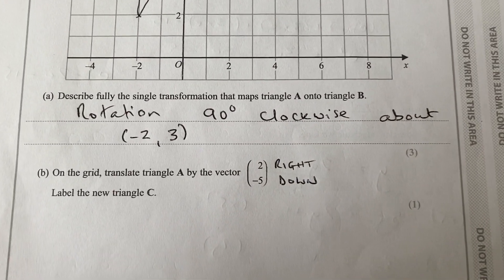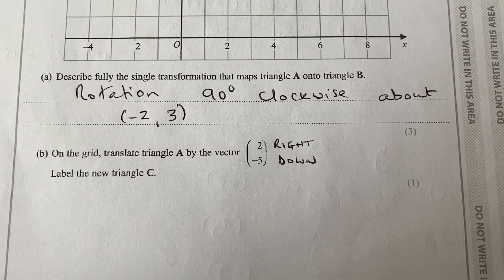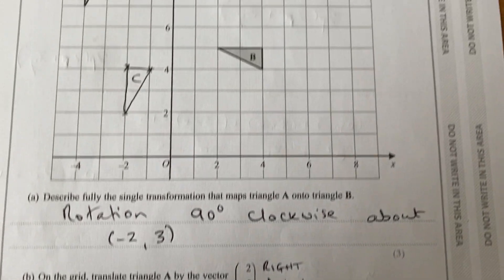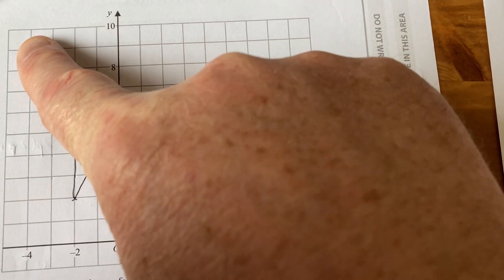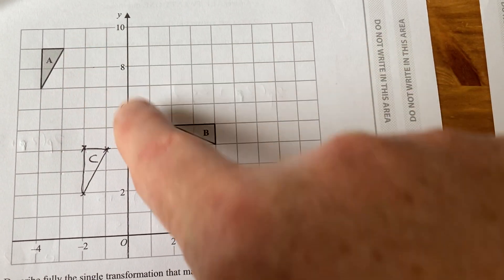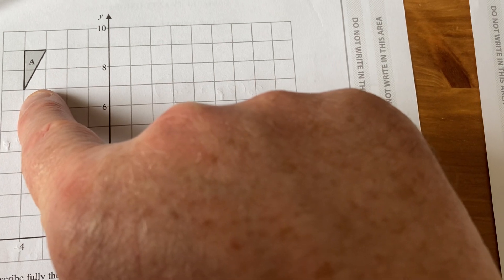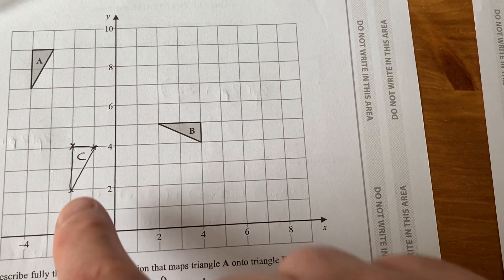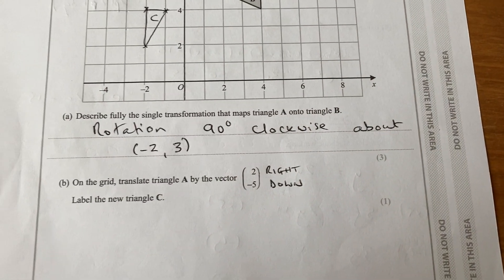Part B: translation vector, two to the right and five down. So do that to each individual point. That point there will end up here. That point there will end up there. And that point underneath will end up at the bottom there. Draw the shape in and label it C.